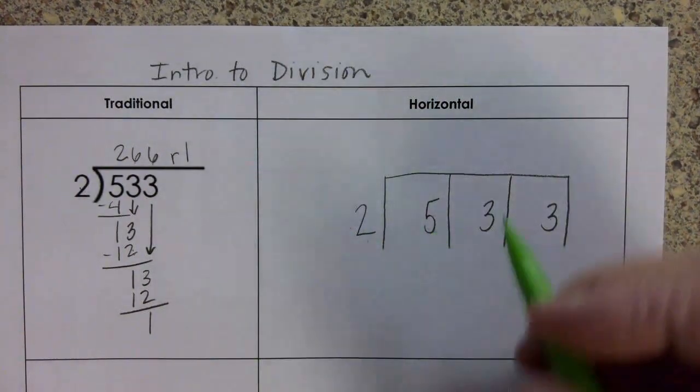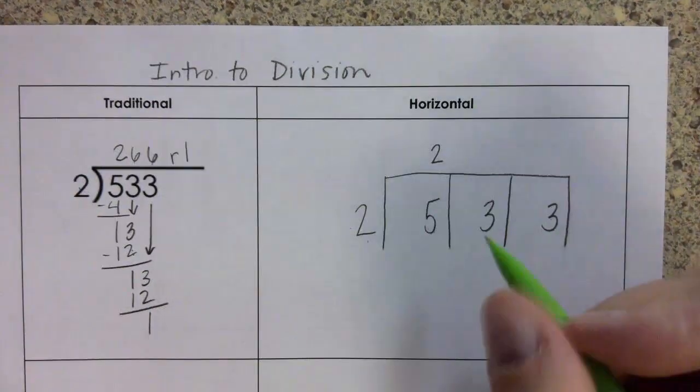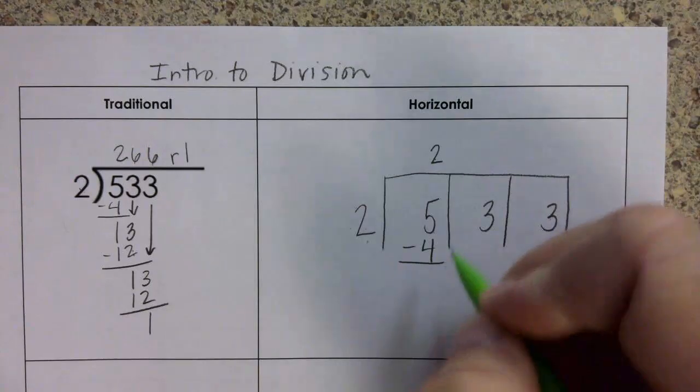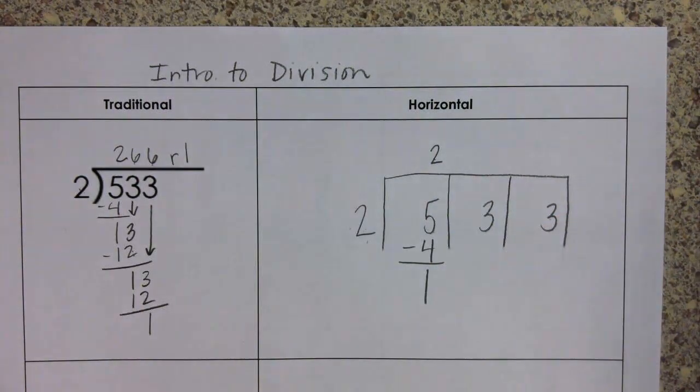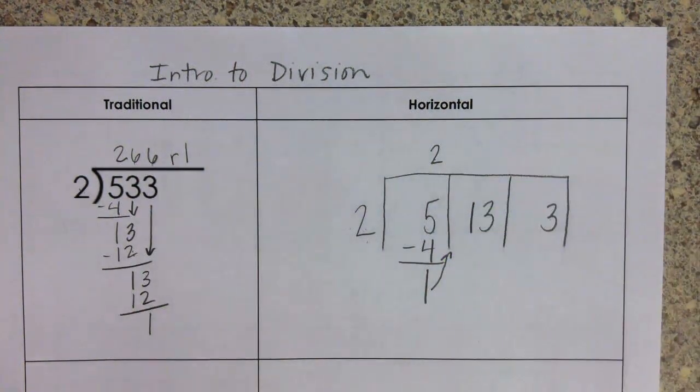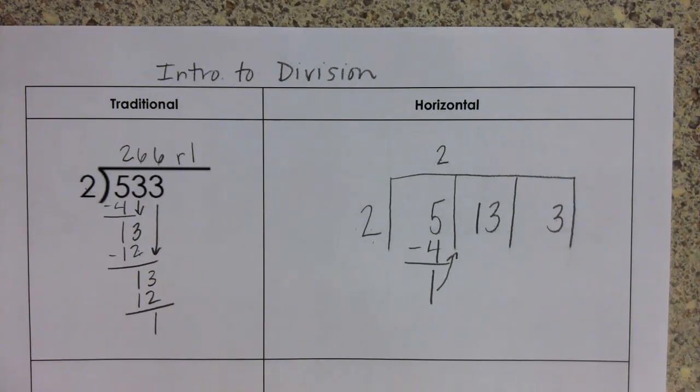How many times can 2 go into 5? 2 times. 2 times 2 is 4. 5 minus 4 is 1. This 1 comes up to join the 3 and makes 13.